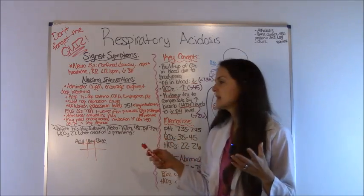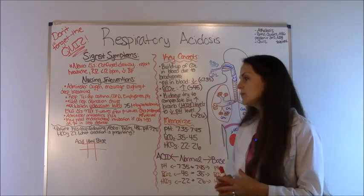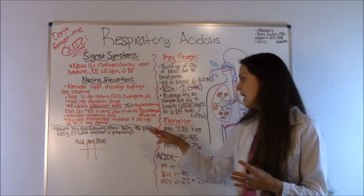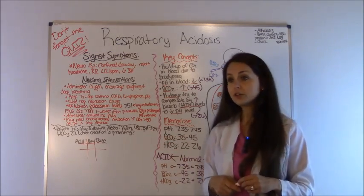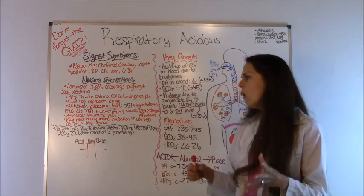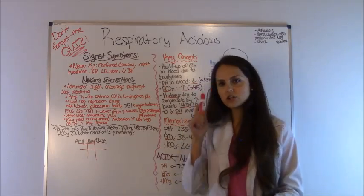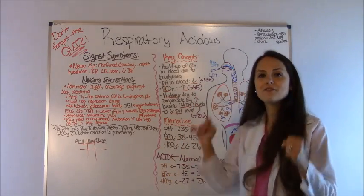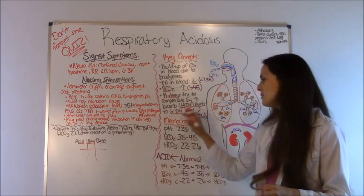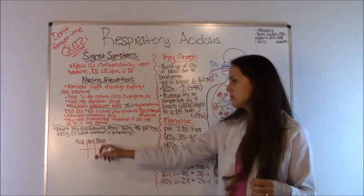Here's what the problem says. Patient has the following ABGs: a PaCO2 level of 48, a pH of 7.25, a bicarb HCO3 level of 27. What condition is presenting? We've got to go back to our chart that you have hopefully memorized, and you've got to remember what's acidotic, what's alkalotic, and you're going to set up your tic-tac-toe.